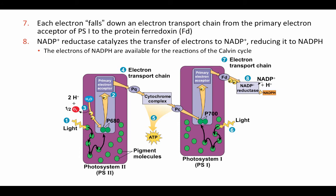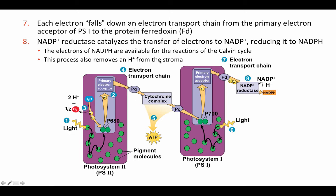The electrons of NADPH are going to be available for the reactions of the Calvin cycle. This process also removes protons from the stroma, adding them to NADPH. We have now seen three places where the proton gradient across the thylakoid membrane is created: protons are released from water into the thylakoid space; protons are actively pumped by the electron transport chain between photosystem II and photosystem I from the stroma into the thylakoid space; and protons are removed from the stroma to create NADPH. This creates a high hydrogen ion concentration — low pH — within the thylakoid space, and a basic, high-pH, low-proton environment in the stroma.